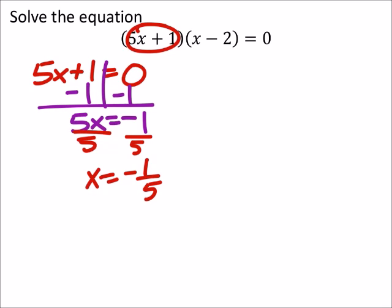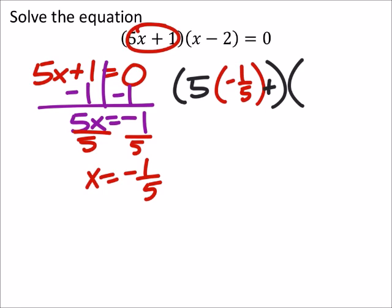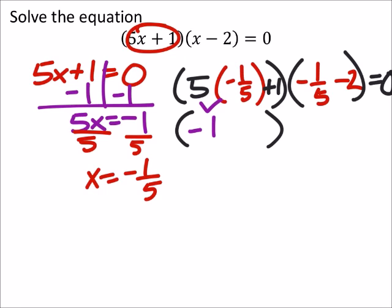Now, again, I should check this. So, I'm going to look at 5x, but x is a negative one-fifth, times, sorry, plus 1, and the x again is negative one-fifth. Again, what's in this second set of parentheses should not make any difference, because if that first factor is zero, then it's all zero. So, 5 times negative one-fifth, that would give me negative one. And I have plus 1.